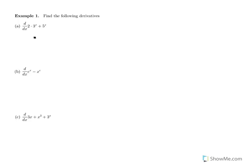To find these derivatives, let's use the derivative rules we learned in section 3.1. We can write a constant out in front of the derivative, so we have 2 times the derivative of 3^x plus the derivative of 5^x.